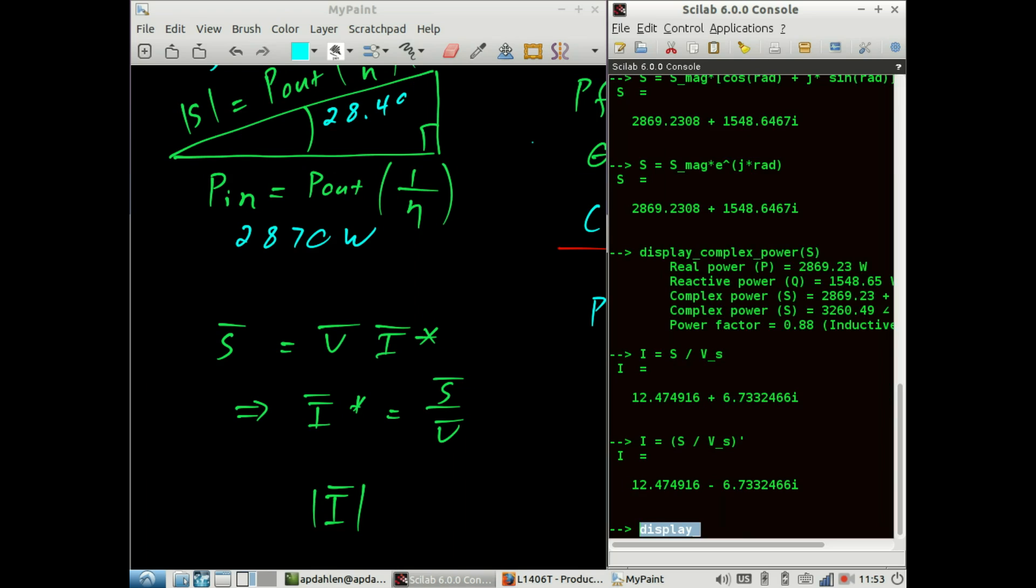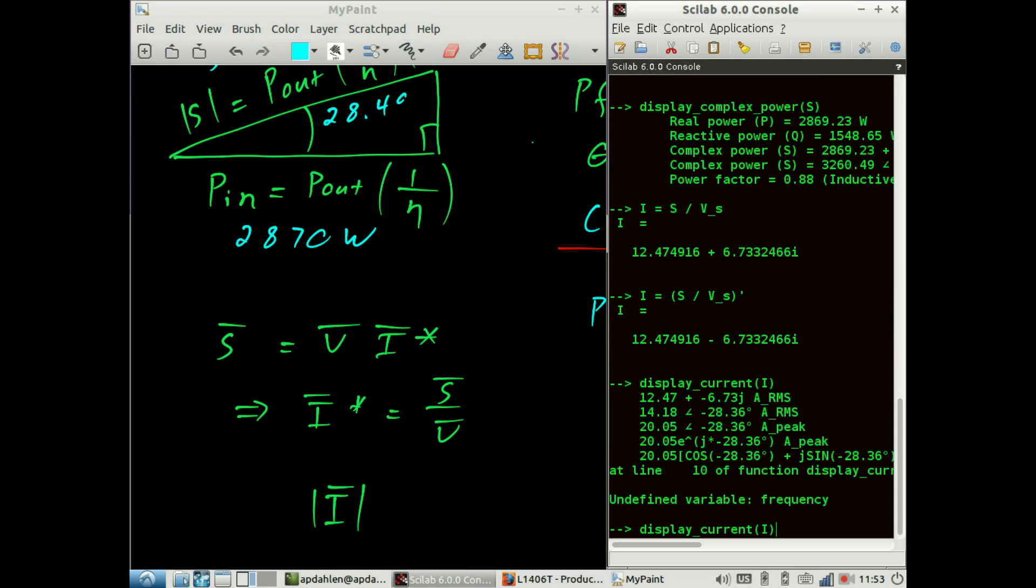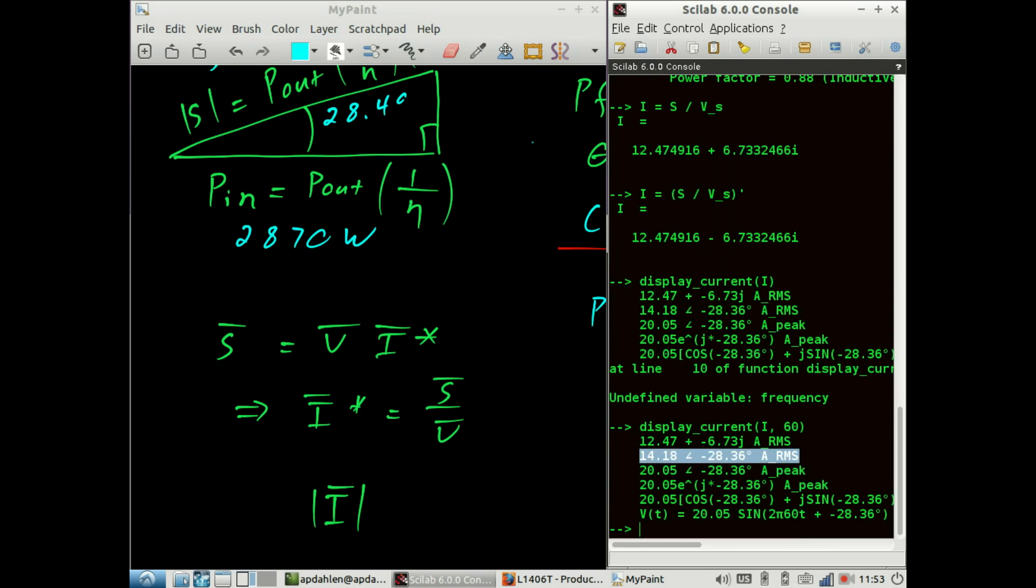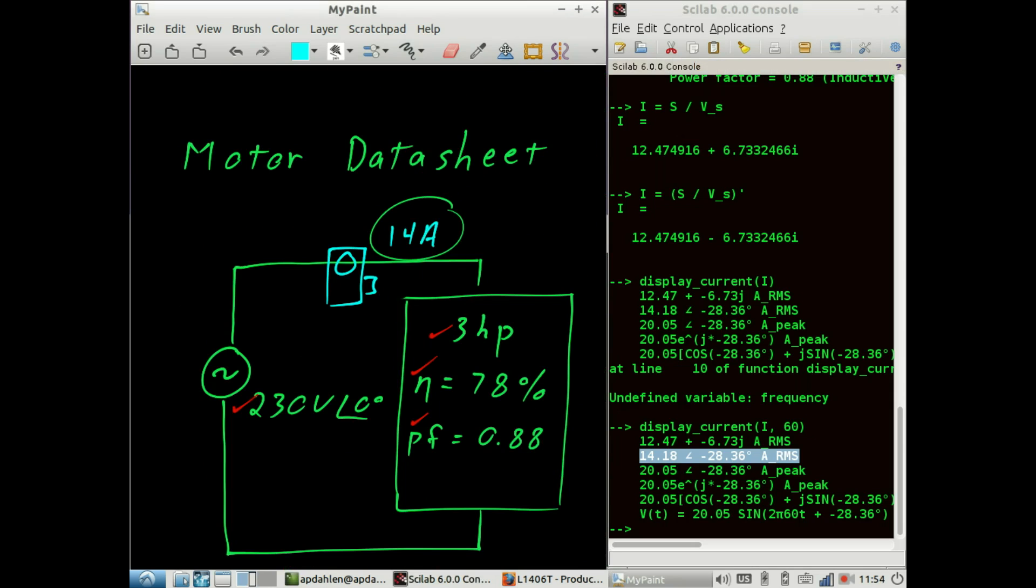To conclude this video, let's look at the current in phasor form. Oops. Don't forget to add the frequency. There we go. This phasor right here is the one of interest. And it looks like we succeeded. If we used an amp clamp to measure the current on that line, we would have 14 amps RMS.